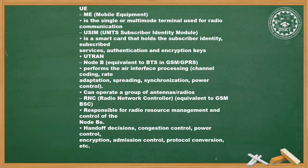Under UTRAN, it has Node B, equivalent to BTS in GSM. It performs air interface processing: channel coding, rate adaptation, spreading, synchronization, and power control, and can operate a group of antennas and radios. RNC — the Radio Network Controller — is equivalent to the GSM BSC. It is responsible for radio resource management and control of the Node Bs, including handoff decisions, congestion control, power control, encryption, admission control, and protocol conversion.